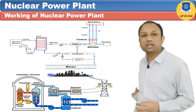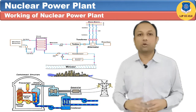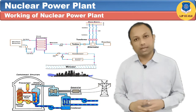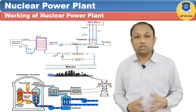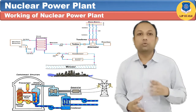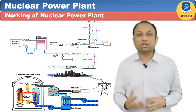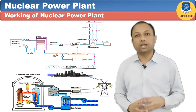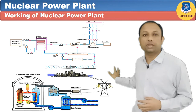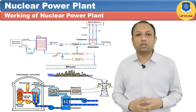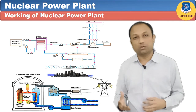When there is sufficient water in the river throughout the year, the hot water coming out of the condenser is discharged into the river and cooled by allowing it to flow through a canal. When the water in the river is not sufficient, cooling towers are used. Hot water is cooled in the cooling tower and cold water is again circulated through the condenser. In such a case, only make-up water is taken from the river or well.